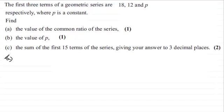Now, for part a, then, we've got to find the value of the common ratio of the series. Now, for a geometric series, we should know that these go up in a common ratio, which we call r. That is, if you multiply 18 by some value r, it gives us 12. And then, if you multiply 12 by the same value r, it will give you p.